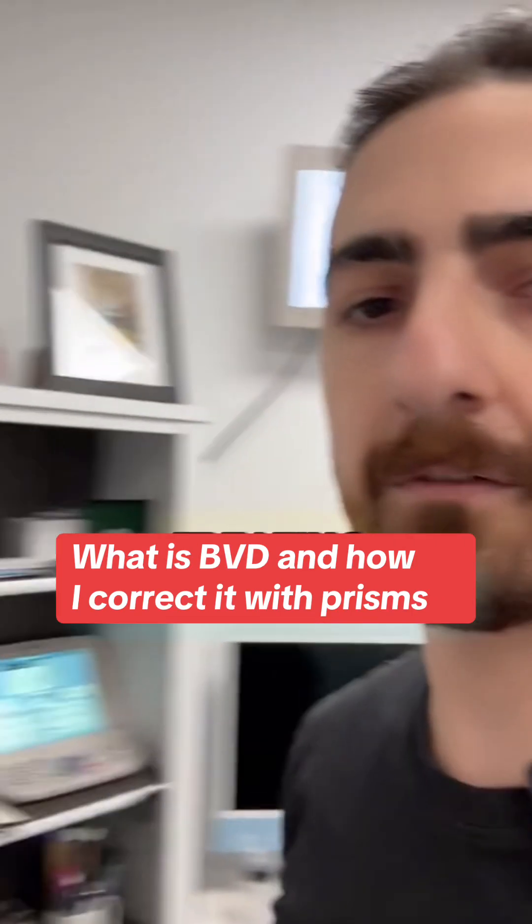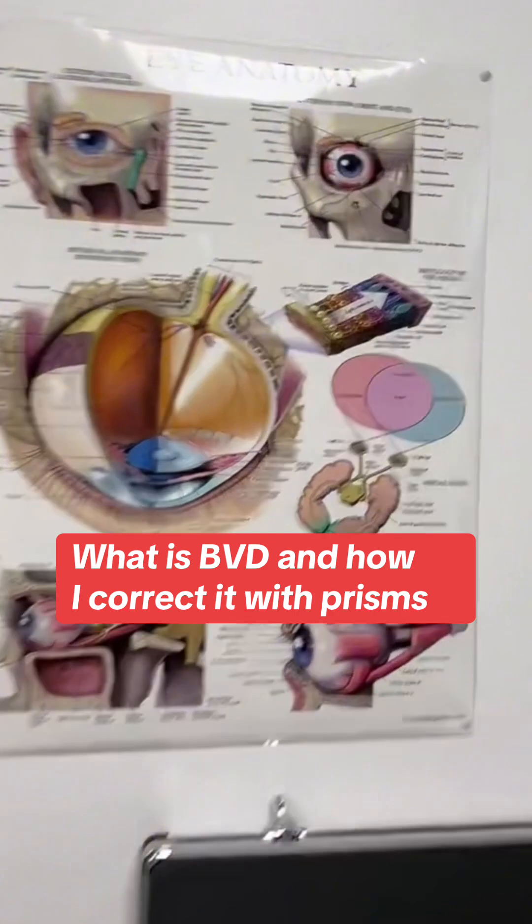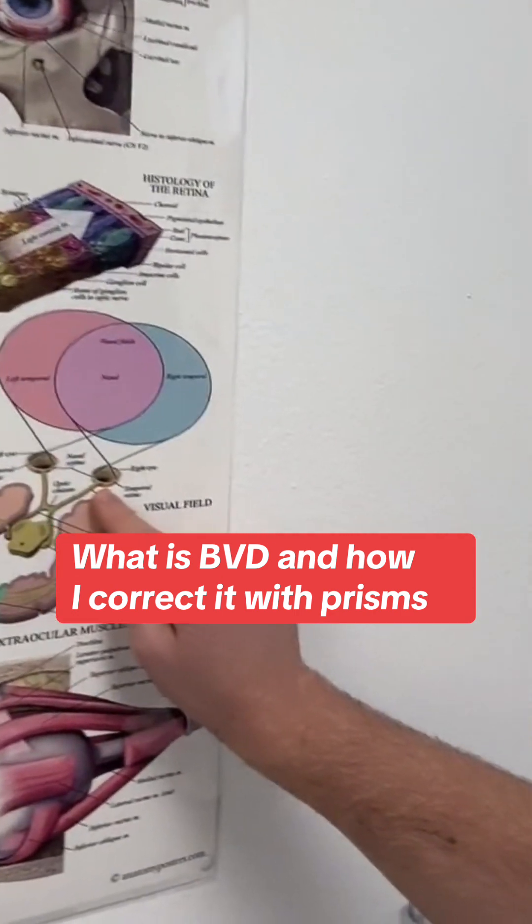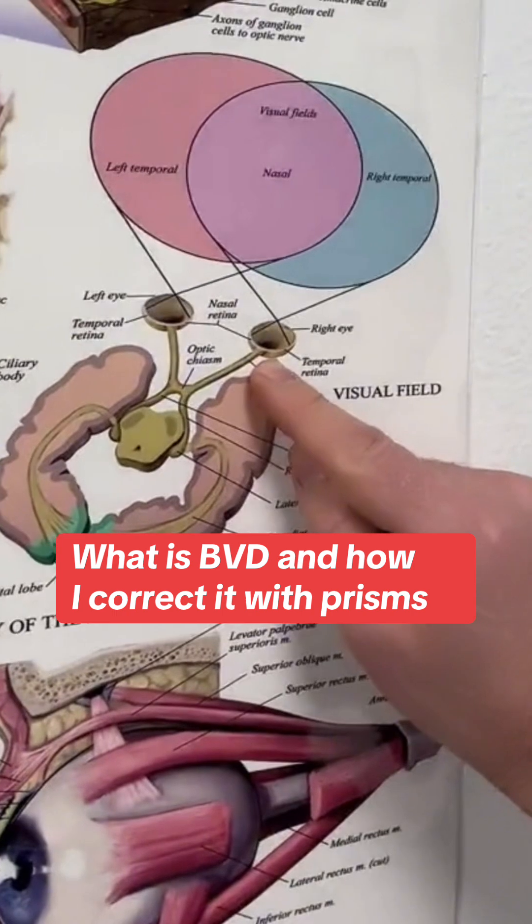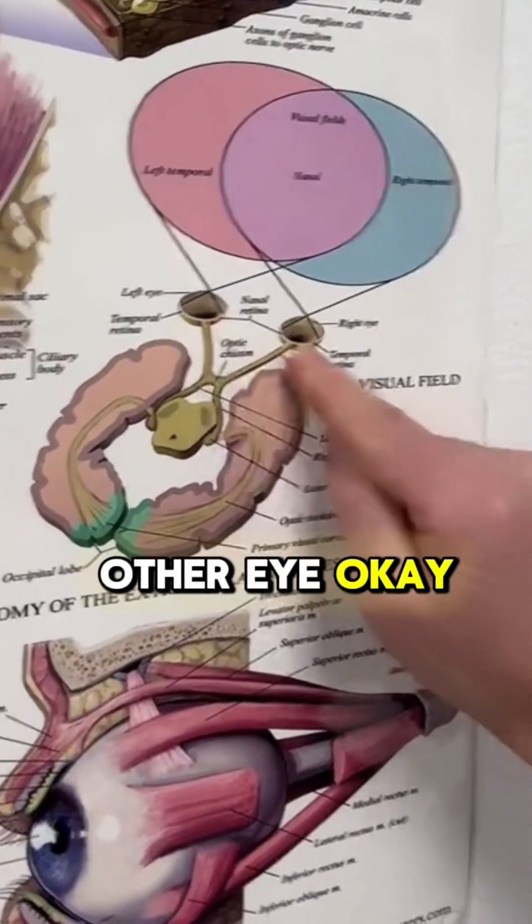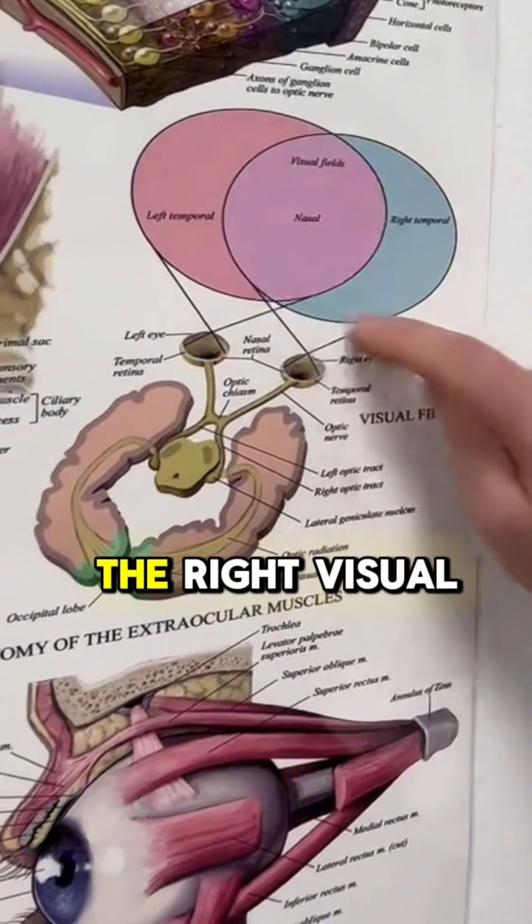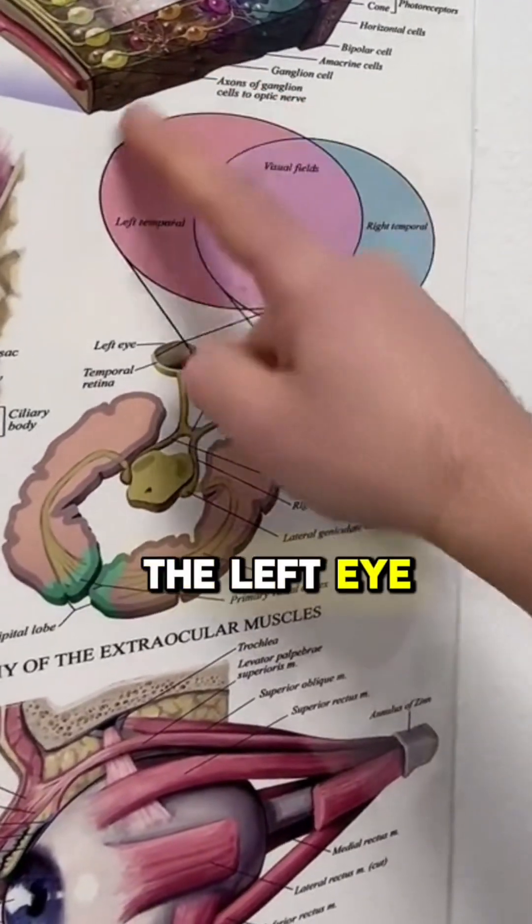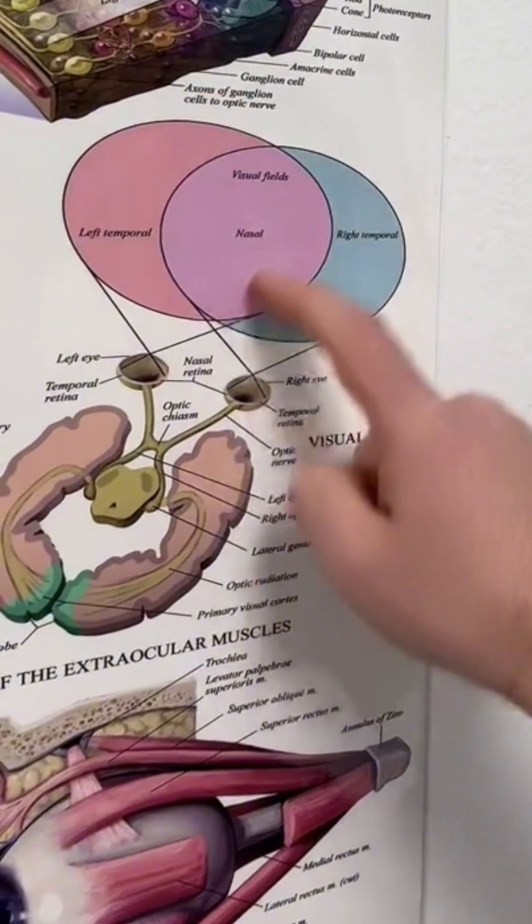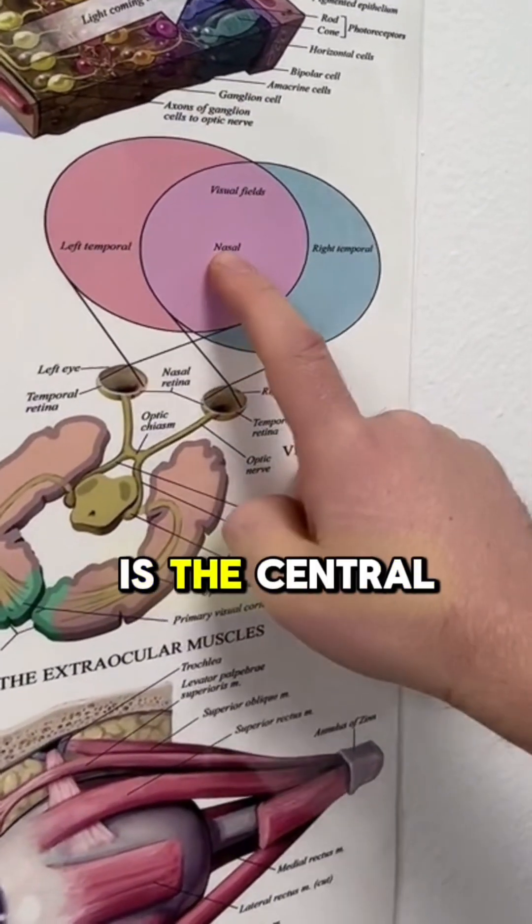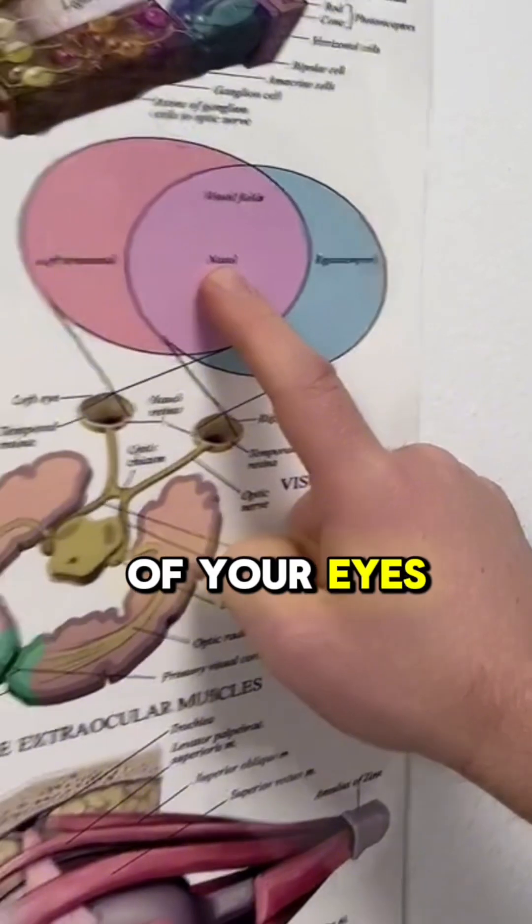The whole purpose of treating binocular vision issues is this: this is our one eye, this is our other eye. Right eye, left eye. The right eye sees the right visual field, the left eye sees the left visual field. This nasal part is the central vision of each of your eyes.